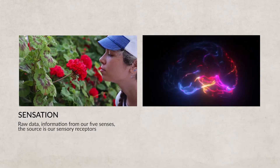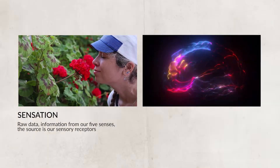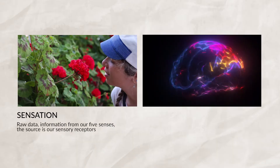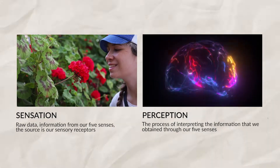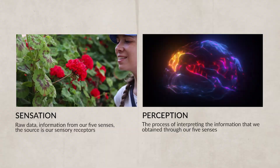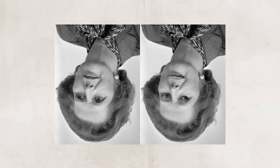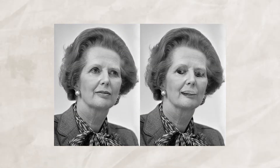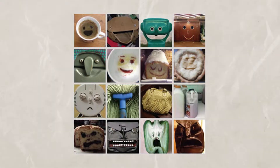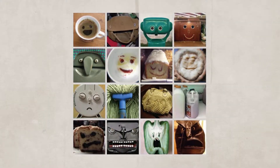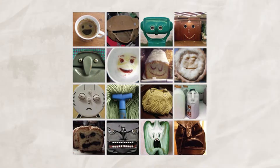Remember from our last video, sensation is raw data — it's information that comes from our five senses. The source is sensory organs, while perception is the process of interpreting the information that we obtain through our five senses. Let's go back to how we process faces and look at these two photos. What you are looking at right now is Thatcher's illusion. This is when we as individuals struggle to identify changes made to a face when looking at it upside down. If we flip these photos upright we can clearly see the problems with these photos. Our brains are constantly trying to identify faces in the world around us and they're really good at quickly finding them.